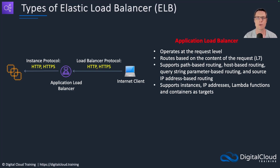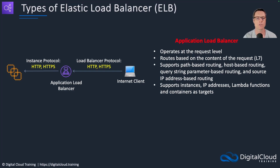The ALB can perform things like path-based routing or host-based routing. Path-based routing uses the path in the URL — so if it's /orders versus /my-account, it can send the connection to a different set of targets in a different target group. That's a layer seven function because it actually has to look into the URL, not just at IP addresses and port numbers. The listeners are always HTTP or HTTPS.